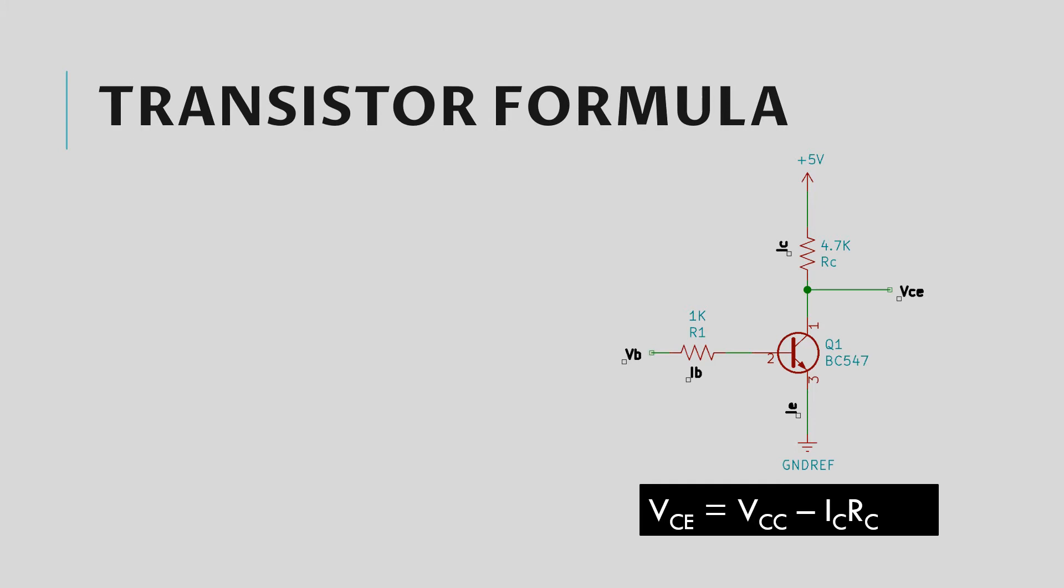Due to which base current IB flows, IC is the collector current. Here the equation of the transistor output voltage is VCE equal to VCC minus IC times RC. For now just remember this is the basic equation.